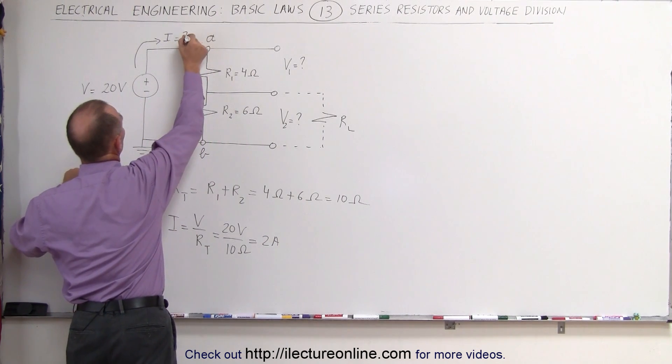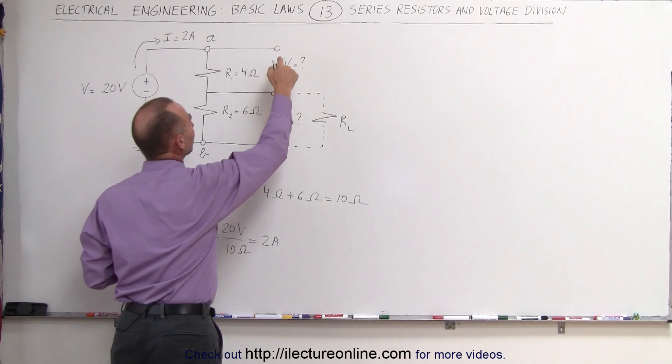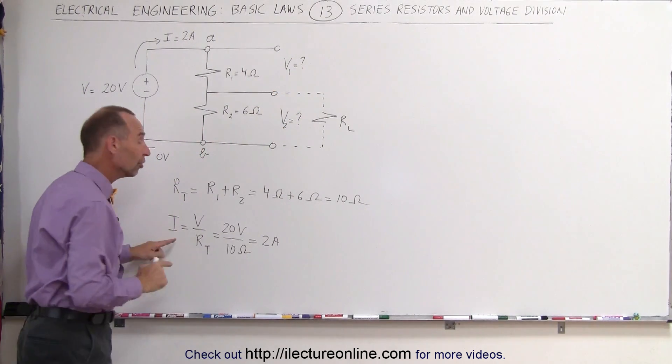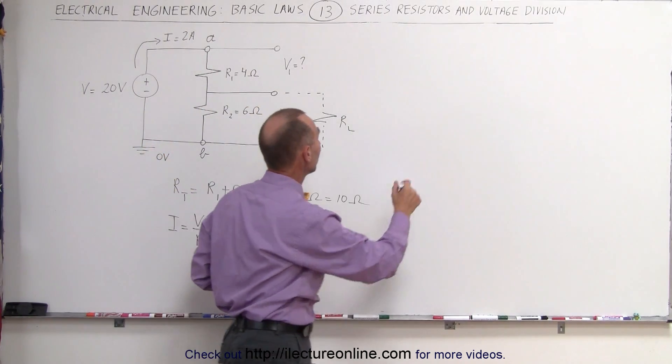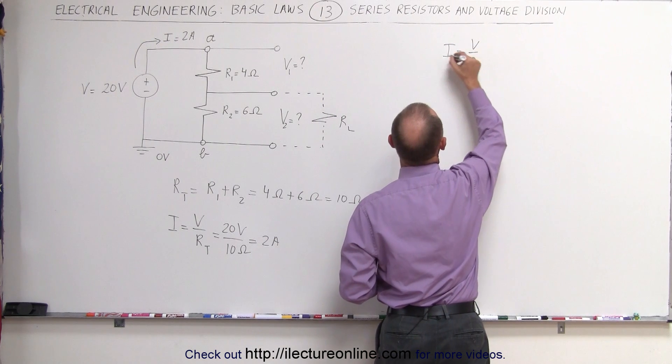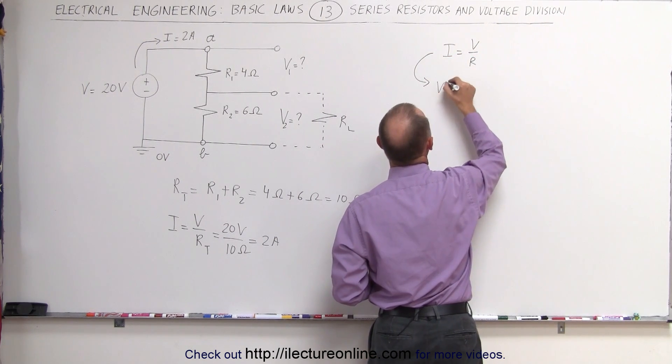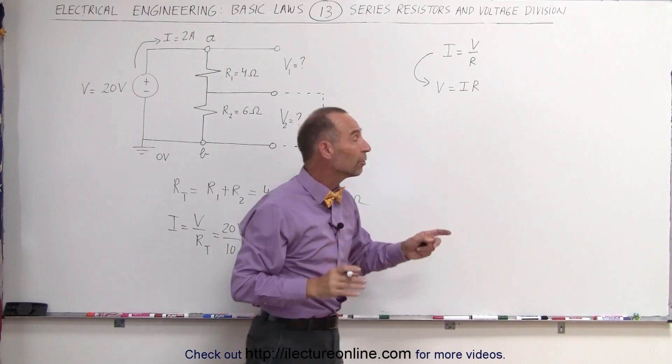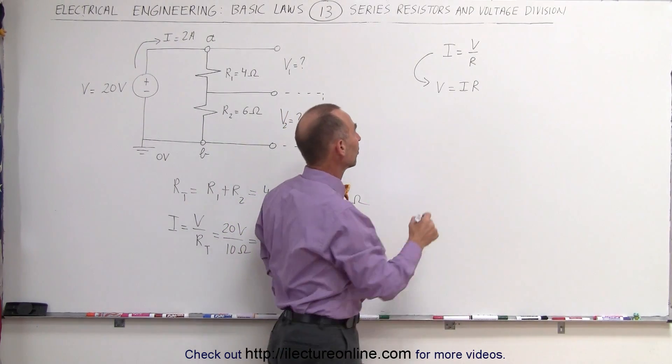So the current here is equal to 2 amps. Now we can find the voltage across R1 and the voltage across R2. Again, using Ohm's law, we can take I equals V over R and write it as V equals I times R. So the voltage across any resistor is simply the current through the resistor times the resistance.